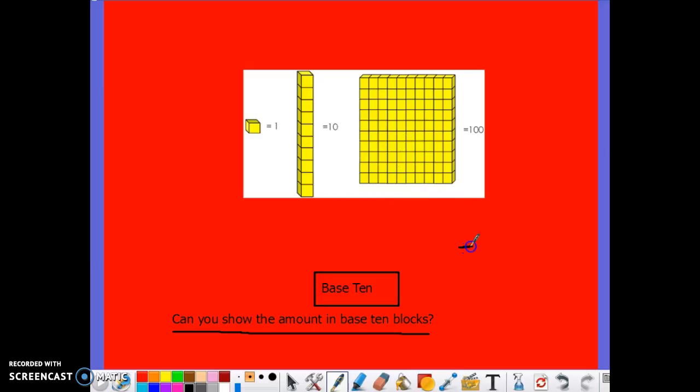Because each place value column, if I started with ones, tens, hundreds, to the right would be ten times larger than the previous place value that we were just discussing. In other words, the tens place value is ten times larger than the ones. And the hundreds place value is of course ten times larger than the tens.